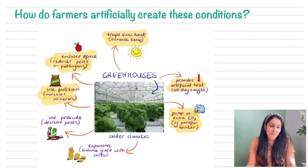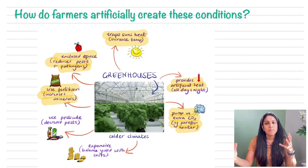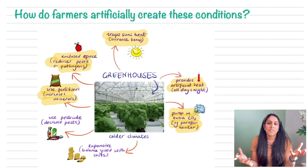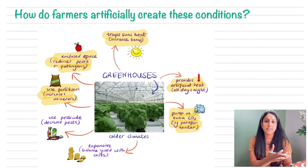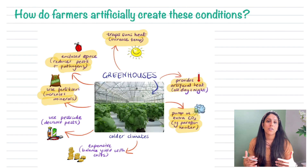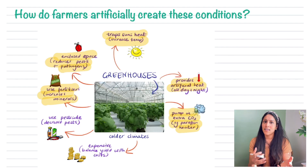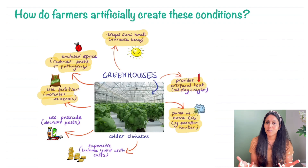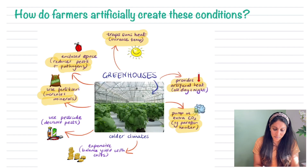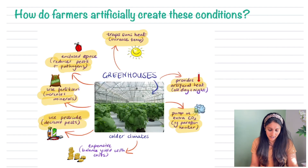Pesticides can also be used by farmers. Although we don't massively like having pesticides on crops, they are effective at getting rid of pests that would otherwise eat away at the crops. If pests damage the crops, the farmer won't have many to sell and won't make much money — so that's why pesticides are used.